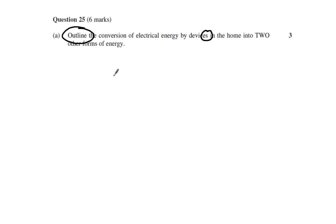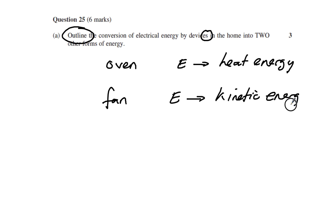This is a particularly easy question. For example, an oven in the home converts electrical energy into heat energy—that's an appropriate response. Then maybe a fan, which converts electrical energy into kinetic energy. So there's another form of energy.